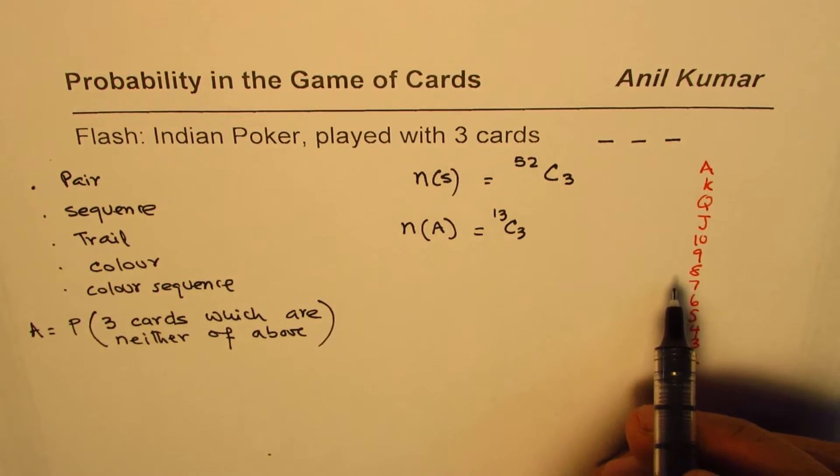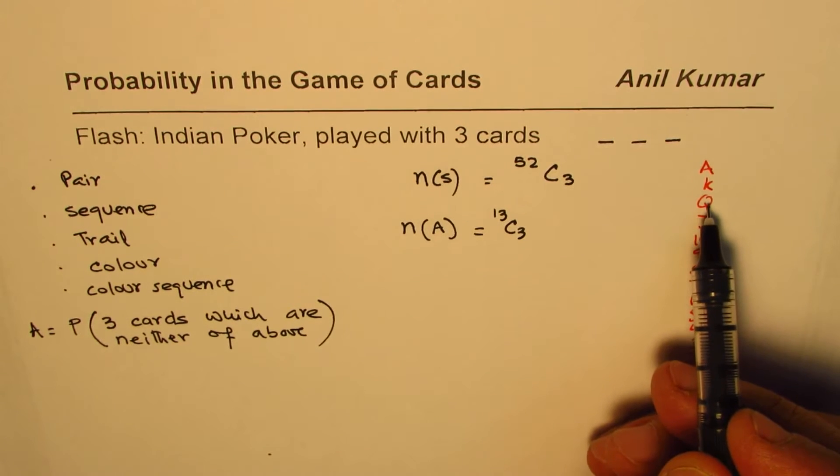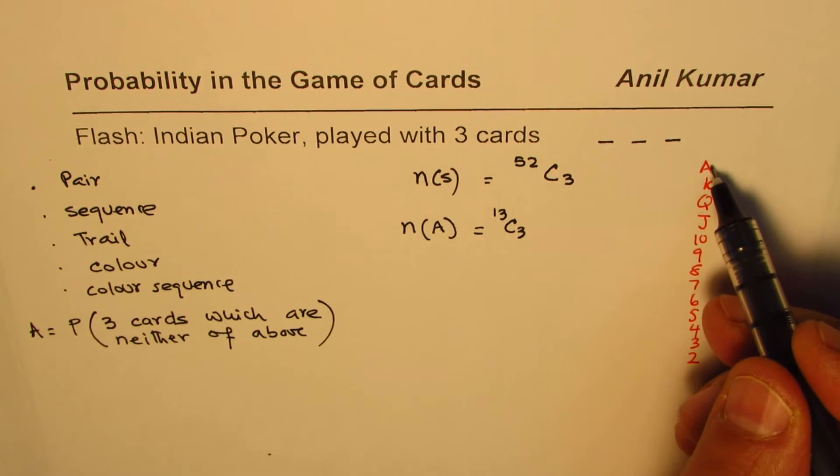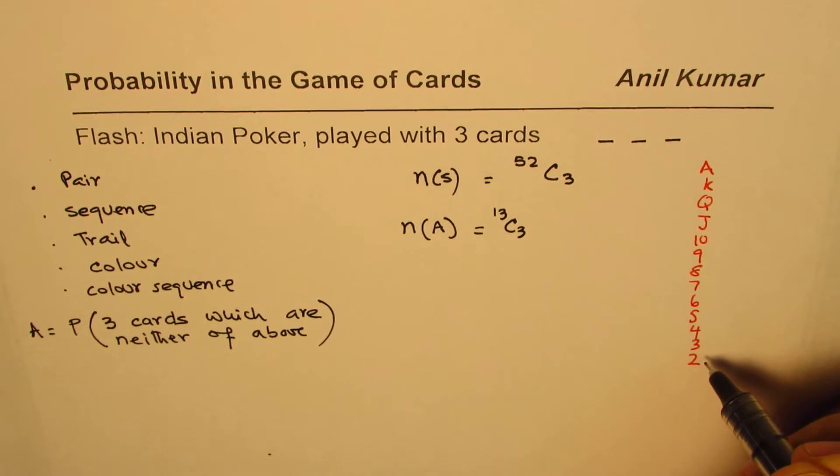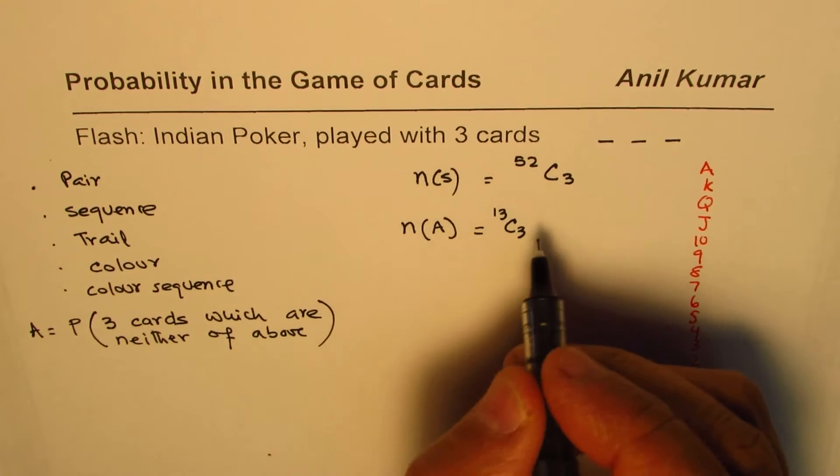We have selected any one of these three. Now out of these three, what we will have is they could be in a sequence. For example, ace, king, queen. How many options are there which can form a sequence? You'll find that the sequence should start from a number, not including two. Ace can be arranged anywhere.